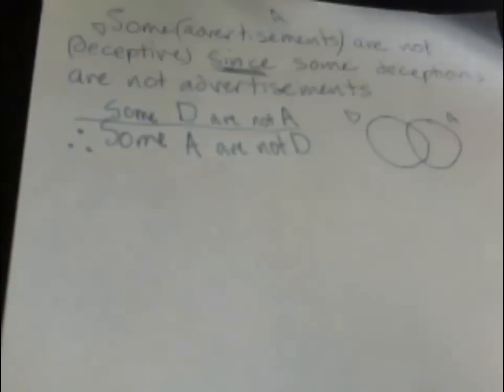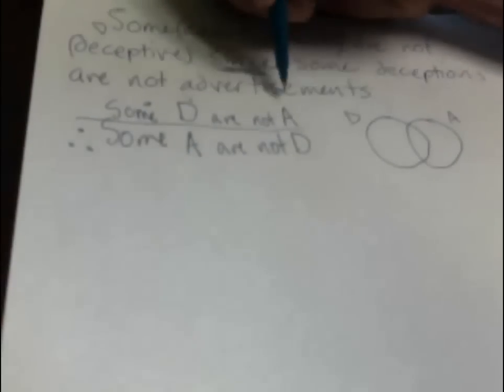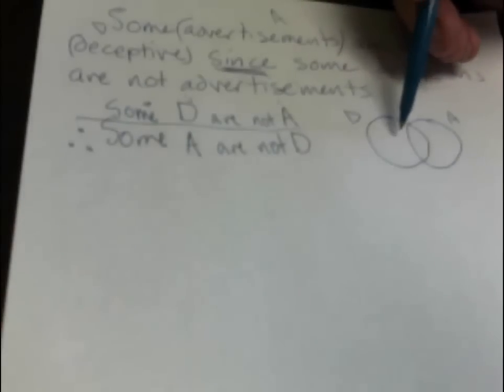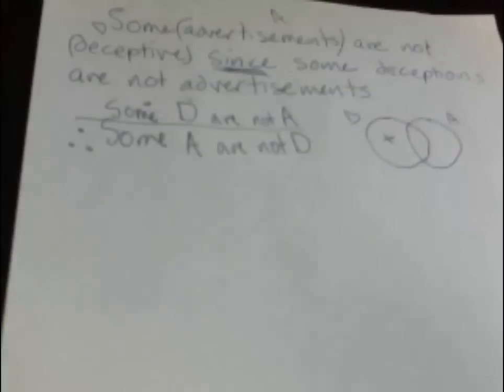Some D are not A says there is something, that's an X, we're drawing an X. There is something inside D but outside A. Inside D but outside A is right here, so we put an X there. That's the premise.